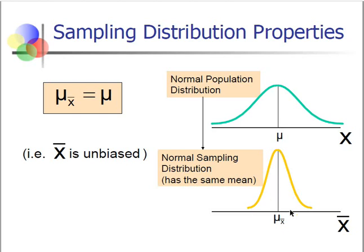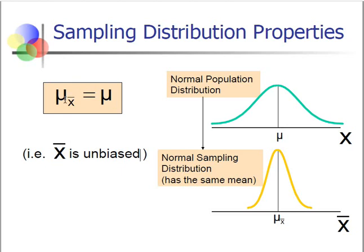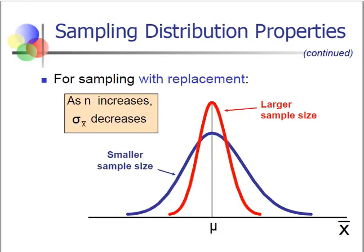We are back to the normal curve. For the sampling distribution, the mean is the mean of the sample means. X-bar is an unbiased estimator, meaning when we estimate the population mean with the mean of the sample means, we get the same value. So this estimation is unbiased — we get the true picture when we use the sample mean to estimate the population mean.